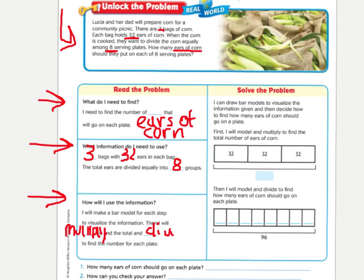So multiply to find the total number of corn ears that we have, and then I will divide to find the number for each plate.